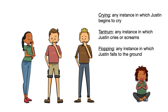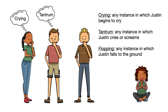In this example, the definition of crying is any instance in which Justin begins to cry. Tantrum is defined as any instance in which Justin cries or screams. And the definition of flopping is any instance in which Justin falls to the ground. Given these definitions, three different people could think they are observing three different behaviors.